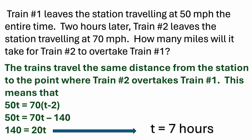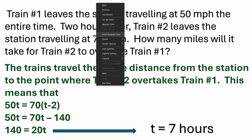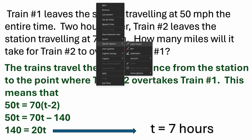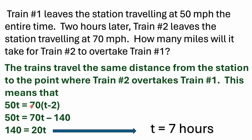Knowing that train number one travels 50t miles and train number two travels 70 times t minus two, we can set those equal to each other. So we have 50t equals 70 times the quantity t minus two. Set those distances equal and solve for t. You end up with 140 equals 20t.